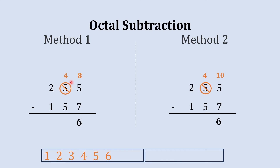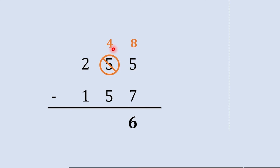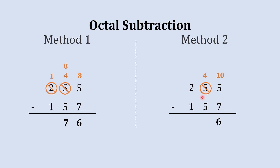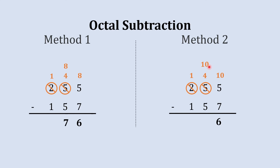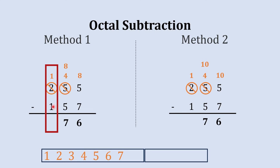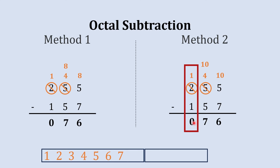We write 6 in that column. Now subtracting 5 from 4 in the next column — not possible. So we ask for a borrow from the next column. In method 1, when this 2 gives a borrow it's 8 here and 1 is left. So 8 plus 4 is 12, and 12 minus 5 gives 7. In method 2 the same process gives 10 here and 1 remains, so 10 plus 4 is 14 in octal, and 14 minus 5 gives 7. Then finally 1 minus 1 is 0. The final octal subtraction result is 076.